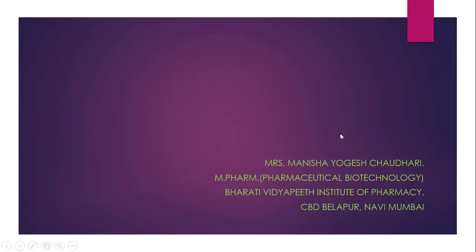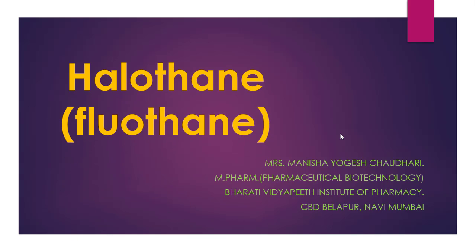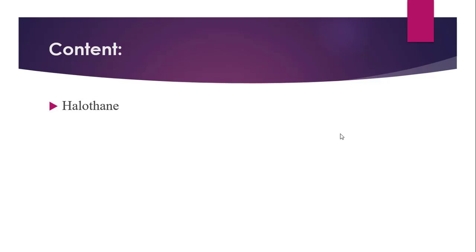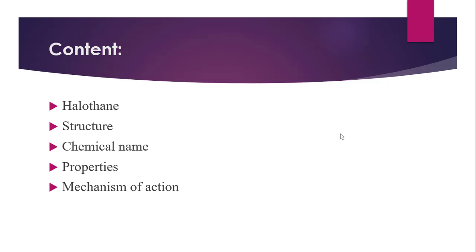Hello Dear Learners. Today we are going to talk about Halothane, which is very famously known as Fluothane. Fluothane is a very famous brand of Halothane. We are going to cover the structure of Halothane, its chemical name, some properties such as solubility, appearance, odour, etc. Then mechanism of action and a few common uses of Halothane.